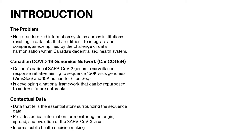The Canadian COVID-19 Genomics Network is Canada's genomic surveillance response initiative to the SARS-CoV-2 pandemic. It's aiming to sequence 150,000 virus genomes and 10,000 human genomes, and it is developing a national surveillance framework that can be repurposed to address future outbreaks.